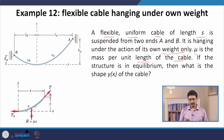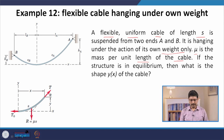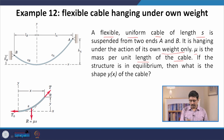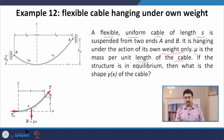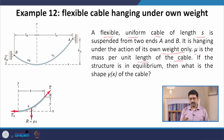Note the difference from the previous example: in that case the external load was W₀ per unit horizontal length. In this case, the mass per unit length μ is per unit length of the cable itself. So there is a crucial difference.